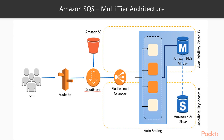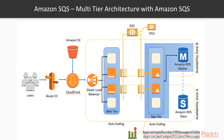Amazon SQS can be introduced into this architecture to improve the ordering process. Using a queue enables orders to be stored as messages which can be held temporarily should outages occur, such as network issues. Once systems are back up, messages or orders can be retrieved from the queue and processed, creating a more resilient environment. SQS queues separate out the web tier from the app tier.